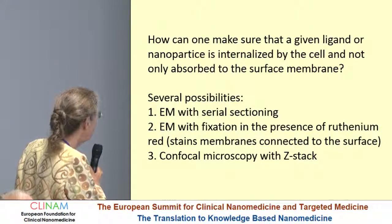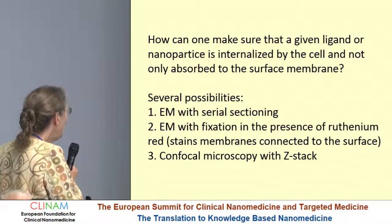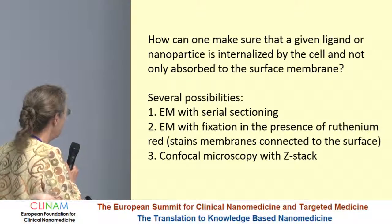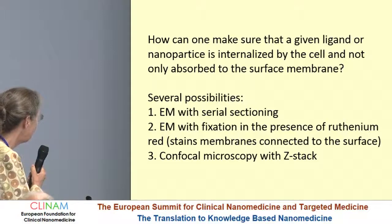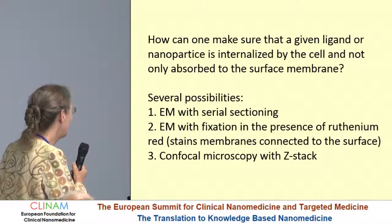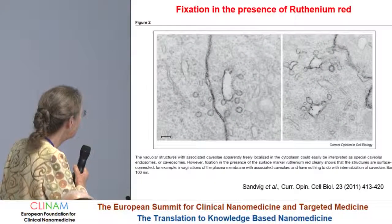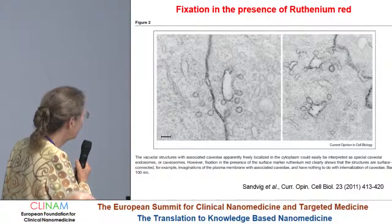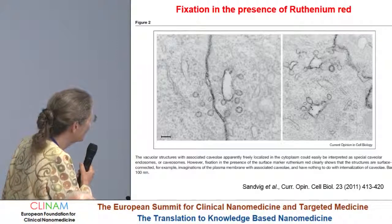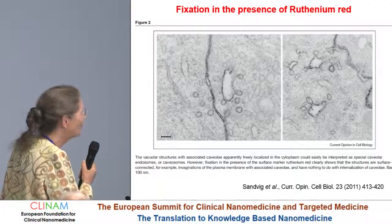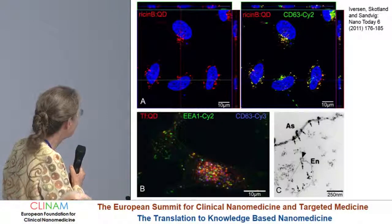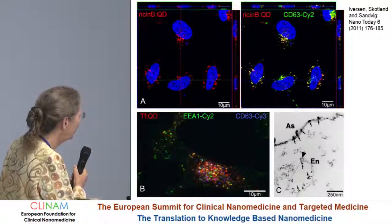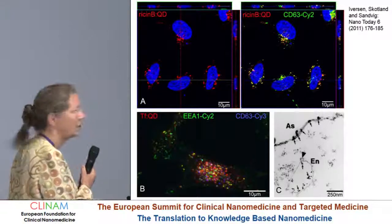How can one make sure that a given ligand or nanoparticle is internalized by the cell and not only adsorbed to the cell membrane? One really should differentiate between membrane-adsorbed substance and what's really inside. There are several possibilities: EM with serial sectioning, EM with fixation in the presence of ruthenium red, or confocal microscopy with Z-stacks. It can be useful to add ruthenium red during fixation — it gives a black staining of everything connected to the cell surface. A structure may look internal when cut, but if it's stained with this dye it is surface-connected. One can also use Z-stacks. Here is another example with ruthenium red staining where you have a true endosome with gold particles and the membrane is not stained.